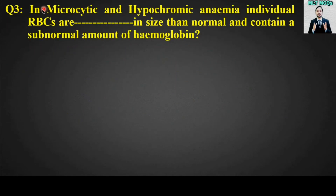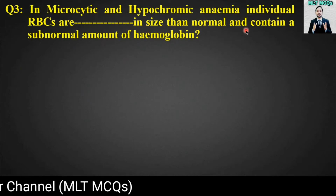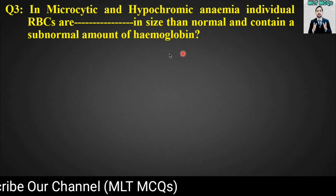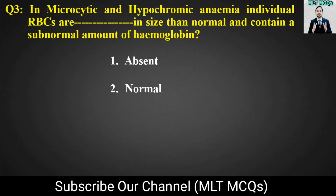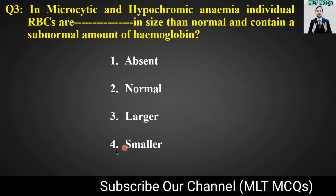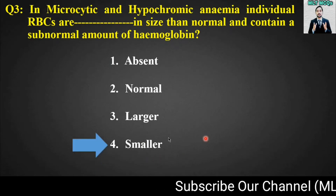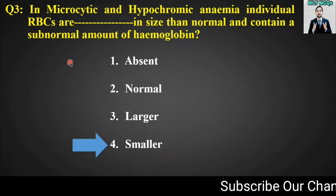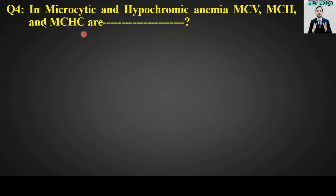MCQ number three: In microcytic and hypochromic anemia, individual RBCs are blank in size than normal and contain a subnormal amount of hemoglobin. Options are: absent, normal, larger, or smaller. The right answer is option number four — smaller. In microcytic and hypochromic anemia, individual red blood cells are smaller in size.